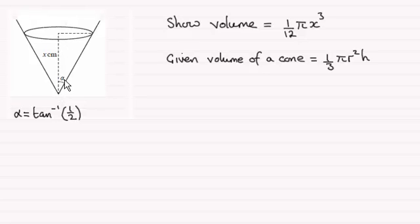And this angle in here, alpha, is given by alpha equaling the inverse tan of a half. And we've got to show then that the volume is 1/12 π x³. And we're given the volume of a cone in general is 1/3 π r² h.